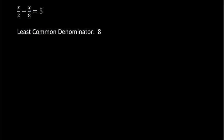So I multiply everything by 8 — 8 times the first term, 8 times the second term, and 8 times the other side, so 8 times 5. When I do that, for the first term, 8 over 1 times x over 2: the 8 and the 2 can divide. 8 divided by 2 is 4, so that's going to be 4 times x.